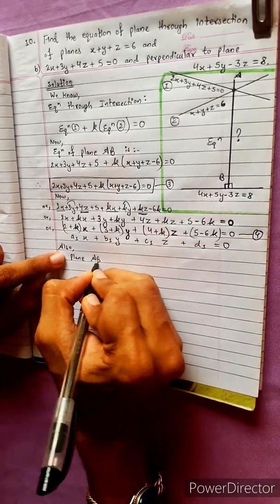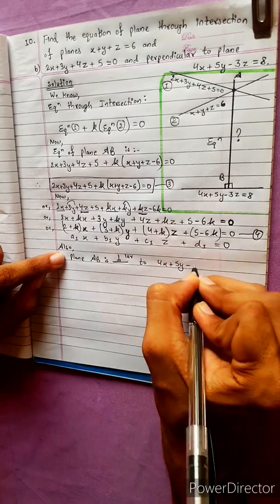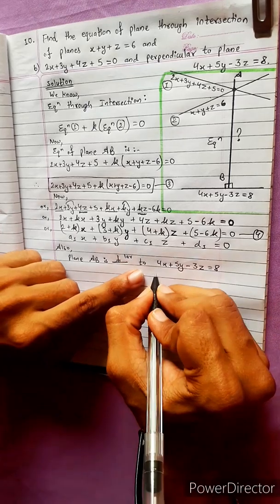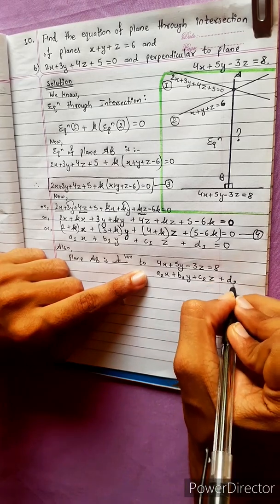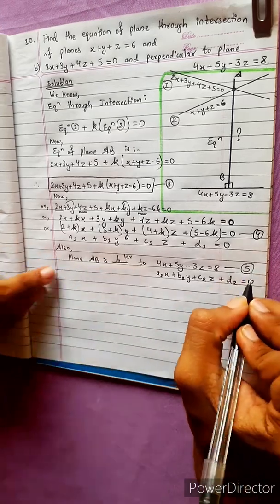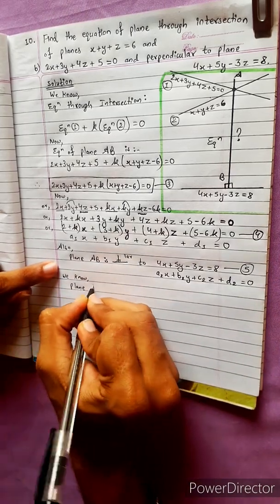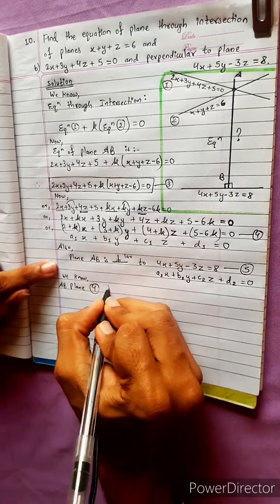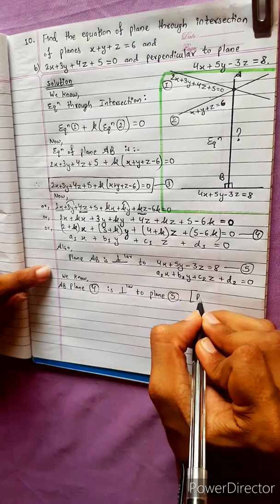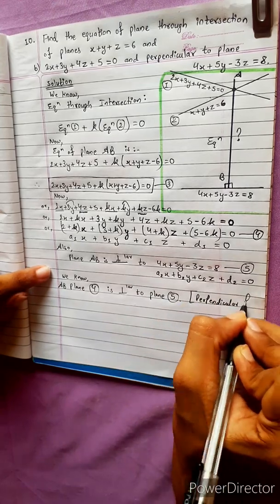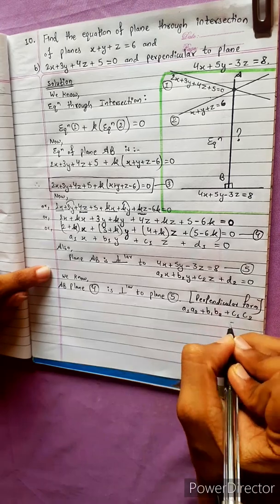Plane A, B is perpendicular to 4x plus 5y minus 3z equals to 8. We have a2x plus b2y plus c2z plus d2 equal to 0. Comparing equation 5, plane 5 is perpendicular. The perpendicular form is applied.